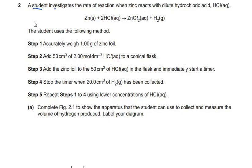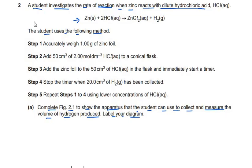A student investigates the rate of reaction when zinc reacts with dilute hydrochloric acid. The student uses the following method. Let's go ahead with sub-question A. It says complete figure 2.1 to show the apparatus that the student can use to collect and measure the volume of hydrogen produced. Label your diagram.